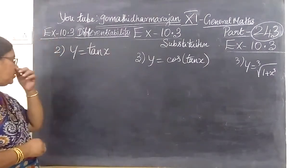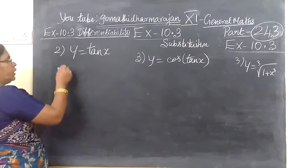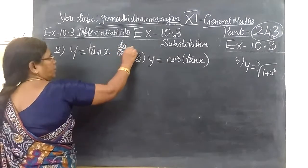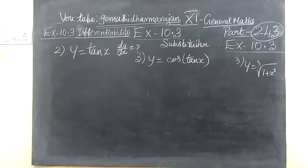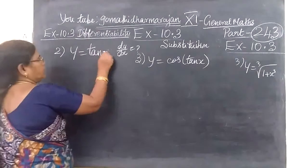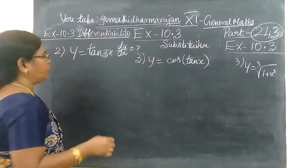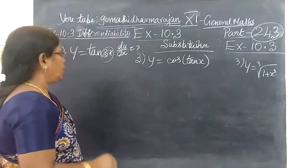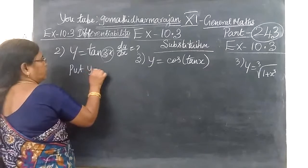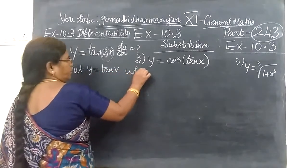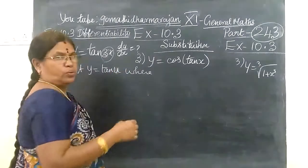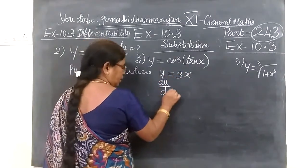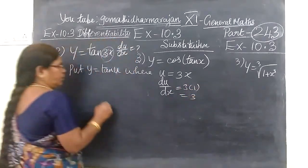After we have done this, y equals tan x. Second question: we want to find dy by ds. Tan x is tan 3s. So, we are using substitution method. Put y equals to tan u, where u equals to 3s. So, immediately du by ds equals 3 times 1, equals 3.